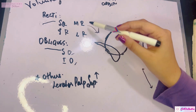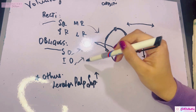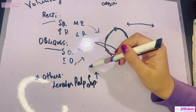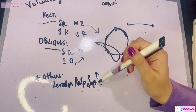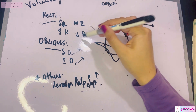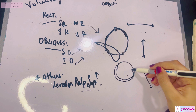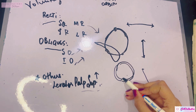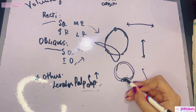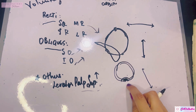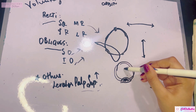To summarize the origins: the recti arise from the common tendinous ring of Zinn; the superior oblique from the undersurface of the lesser wing supramedial to the optic canal; the inferior oblique from the orbital surface of the maxilla lateral to the lacrimal groove; and the levator palpebrae superioris from the orbital surface of the lesser wing, superior to the optic canal. Now for insertions — the entire whiteness of the eyeball is the sclera, and anteriorly we have the iris, the pupil within it, and the thin cornea covering the iris area. All recti muscles insert into the sclera.